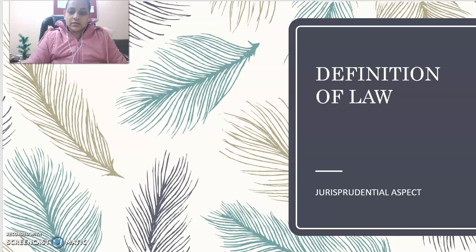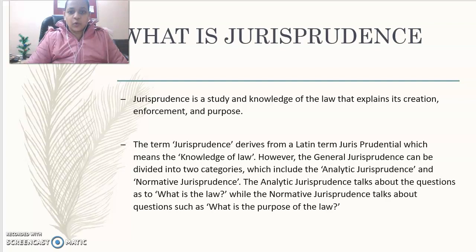In this lecture we shall focus on the definition of law as understood under different schools of jurisprudence. When we talk about the term jurisprudence, we need to understand what it reflects and why the study of jurisprudence is important. Jurisprudence is a study and knowledge of the law that explains its creation, enforcement and purpose, and helps the reader to contemplate, understand and interpret the origination of the concept of law and the theories behind the evolution of law.